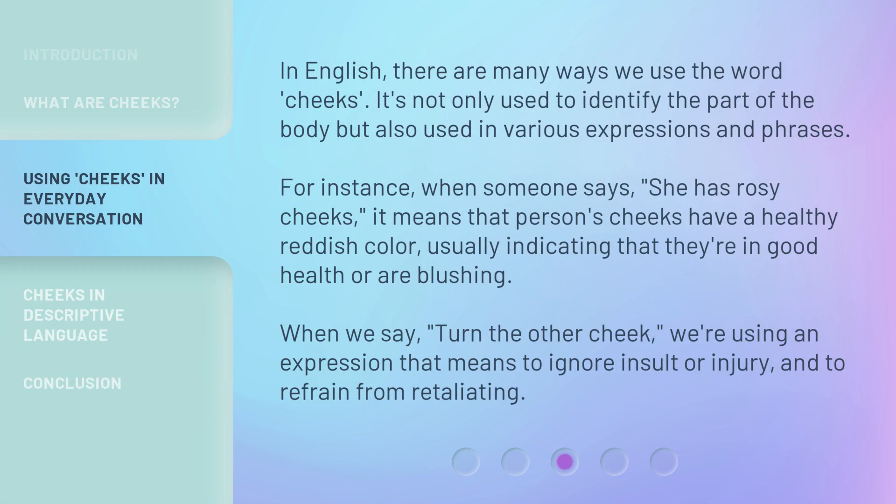In English, there are many ways we use the word 'cheeks.' It's not only used to identify the part of the body, but also used in various expressions and phrases. For instance, when someone says 'she has rosy cheeks,' it means that person's cheeks have a healthy reddish color, usually indicating that they're in good health or are blushing. When we say 'turn the other cheek,' we're using an expression that means to ignore insult or injury and to refrain from retaliating.